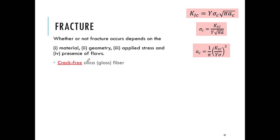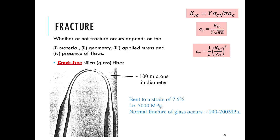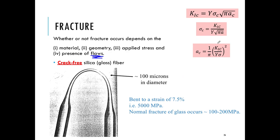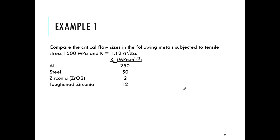As an example, if we take a brittle material like glass and manufacture it with essentially no flaws — such as a glass fiber — we can bend it to enormous deformations reaching bending stresses of 5000 MPa, whereas normally glass fractures at about 100–200 MPa. This demonstrates that fracture occurs because of the presence of flaws, which is why we need the entire branch of fracture mechanics — to analyze what size of flaw will lead to fracturing or not.